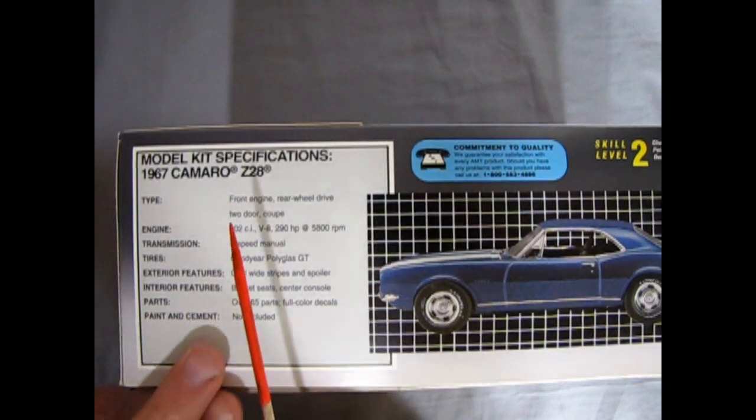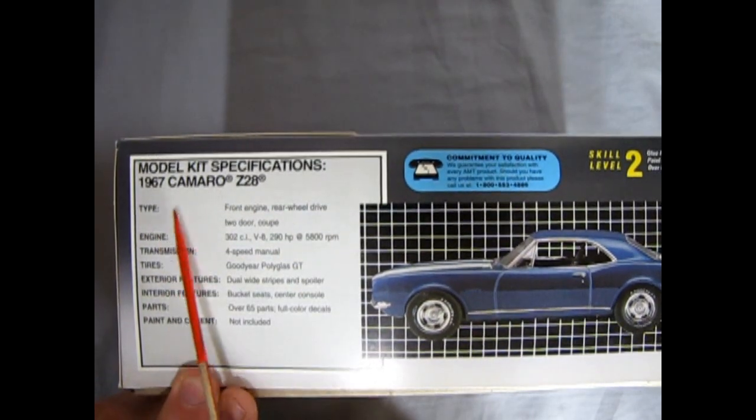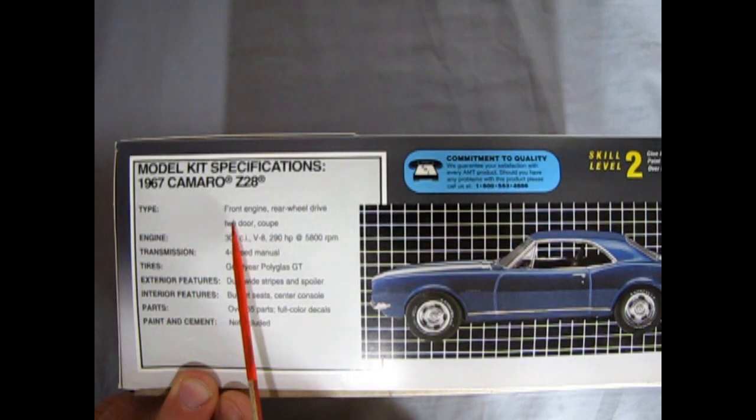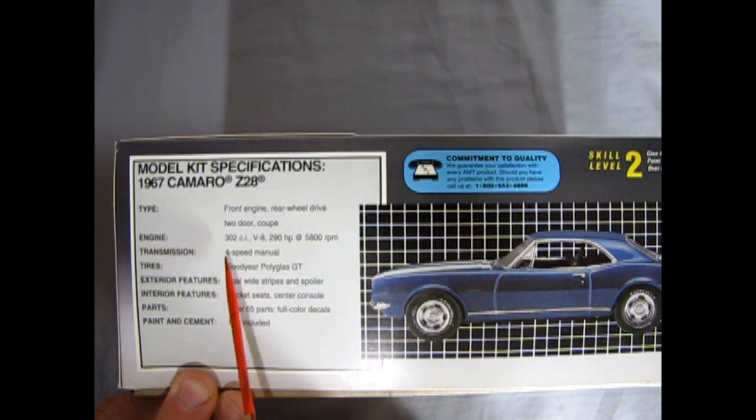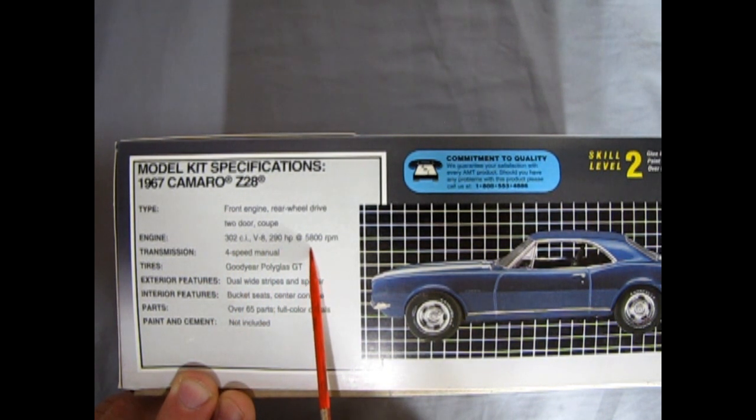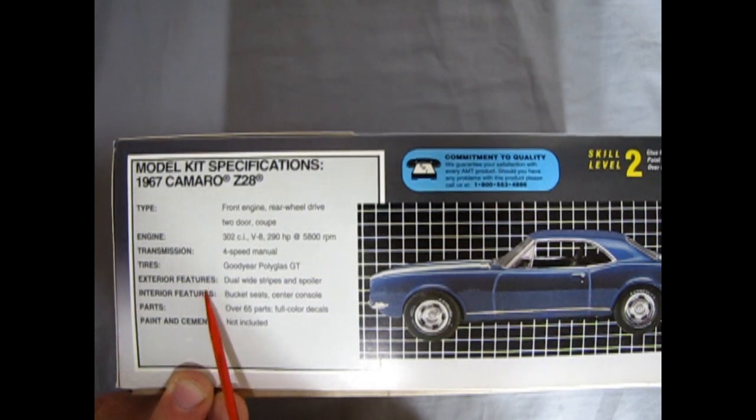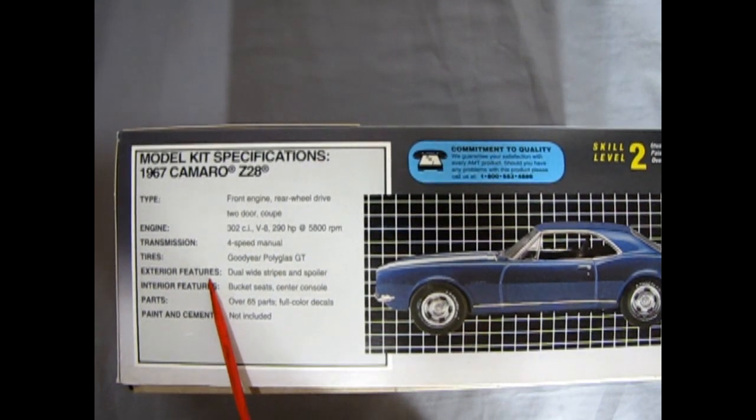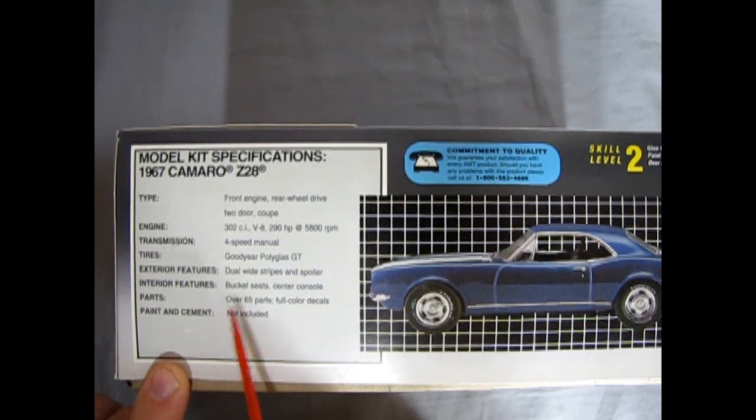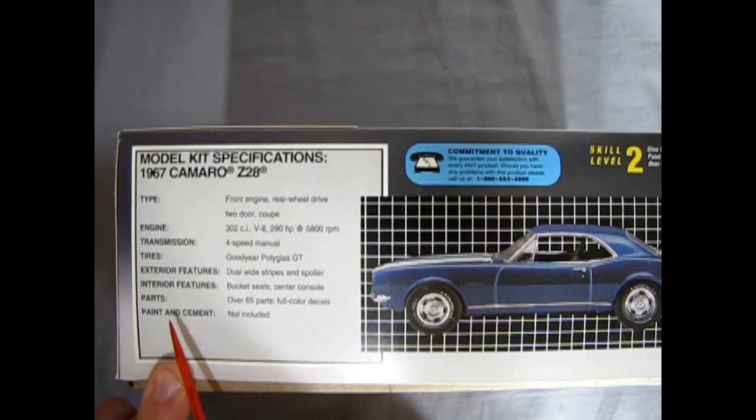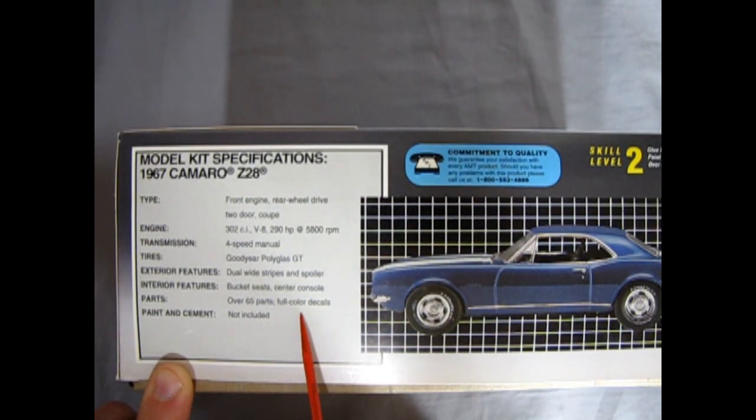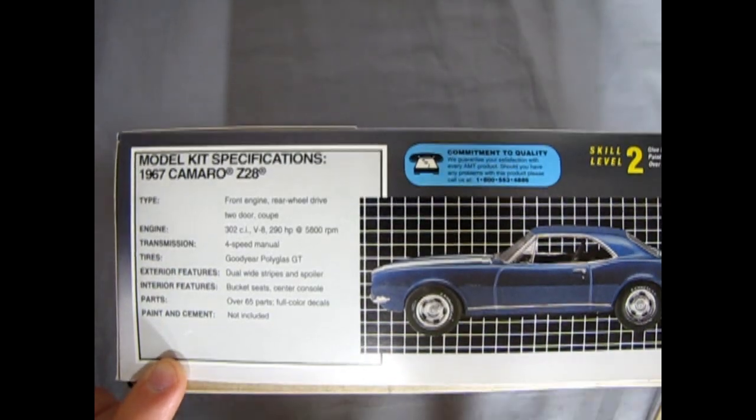Here we have the model kit specifications for the 69 Camaro Z28. The type is a front engine rear wheel drive two-door coupe. The engine is the 302 cubic inch V8 290 horsepower at 5,800 rpm, 4-speed manual transmission, tires are Goodyear Polyglass GTs. The exterior features duo wide stripes and spoiler, interior features bucket seats, center console, over 65 parts, full color decals and paint and cement not included.